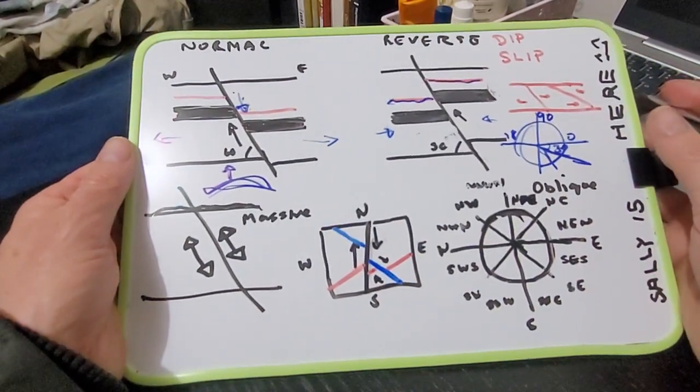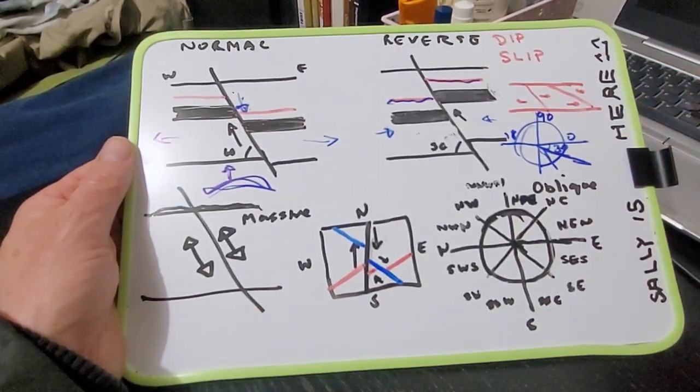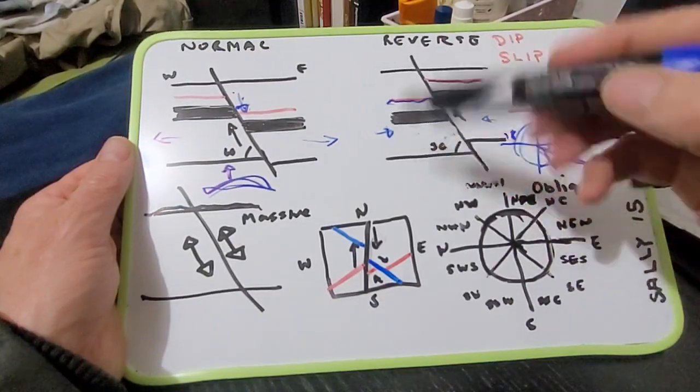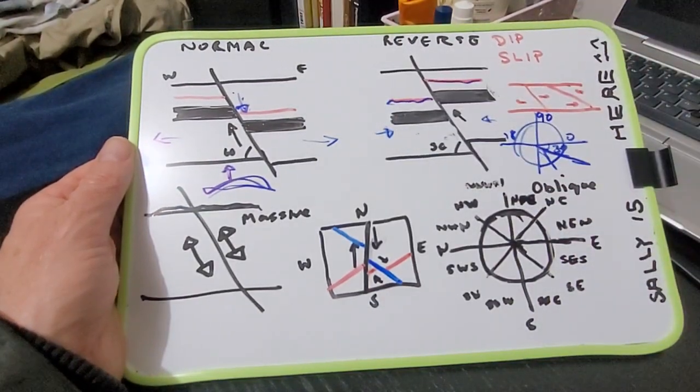So and you also got lateral oblique movement as well. So not only up and down, but also north, south, east or west.